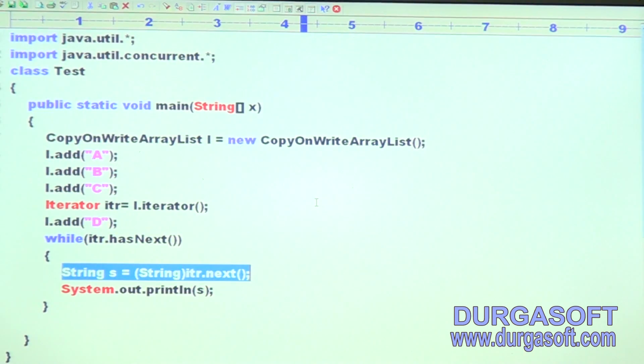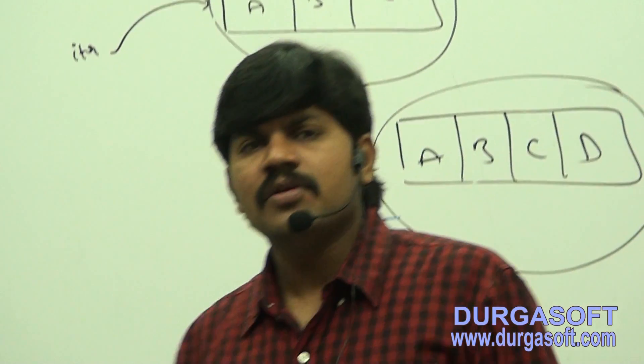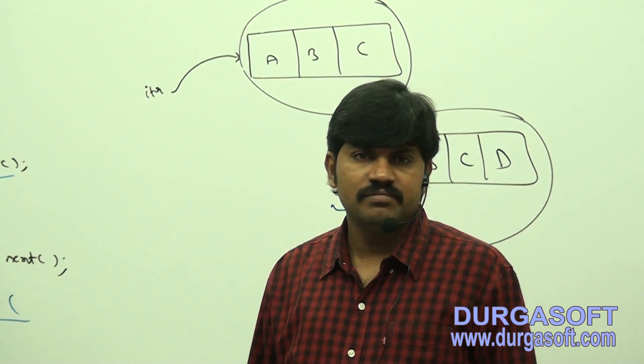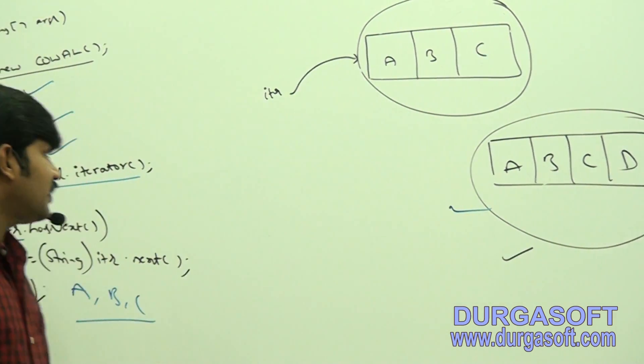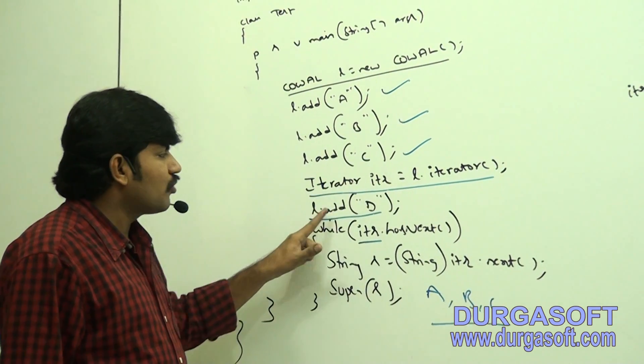Clear for all of you, right? This is a very important bit for certification exam. Make sure you people should be aware. Some students may ask, if it is a normal ArrayList, what will happen? You can able to guess. If it is a normal ArrayList, what will happen? After getting iterator, you are not allowed to modify.